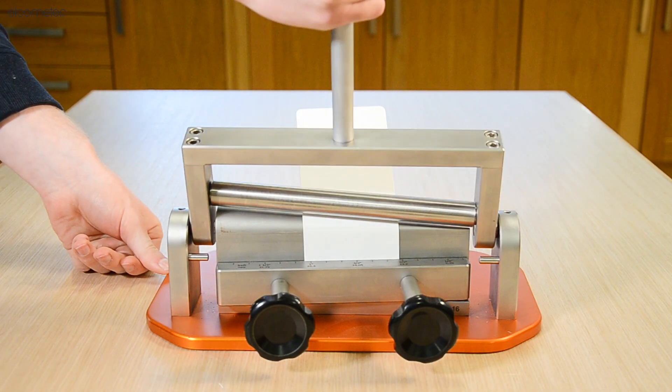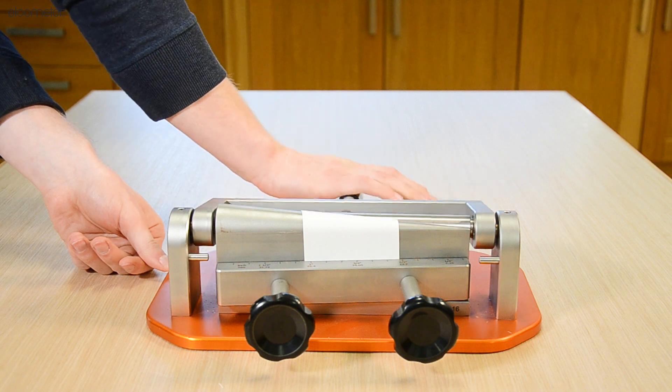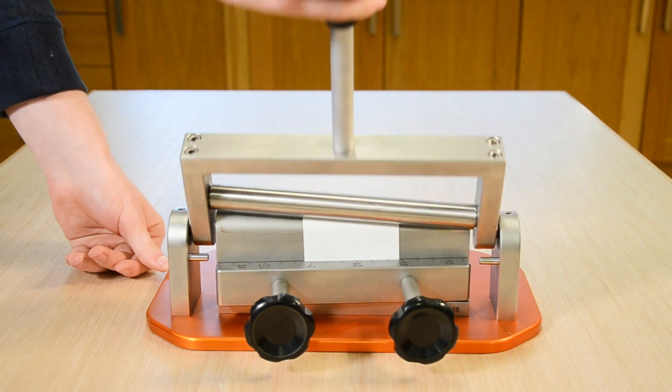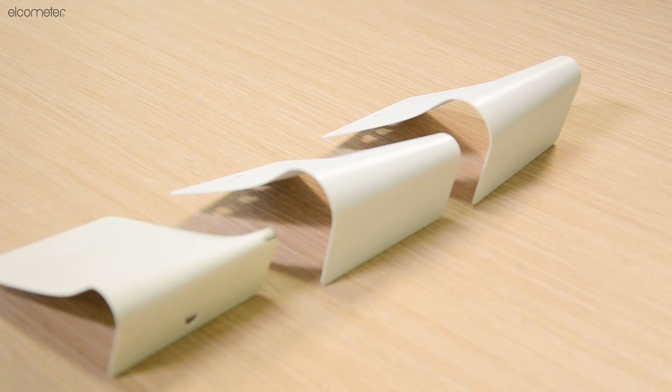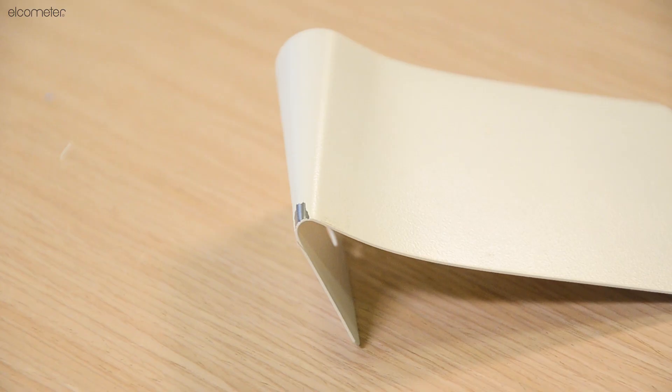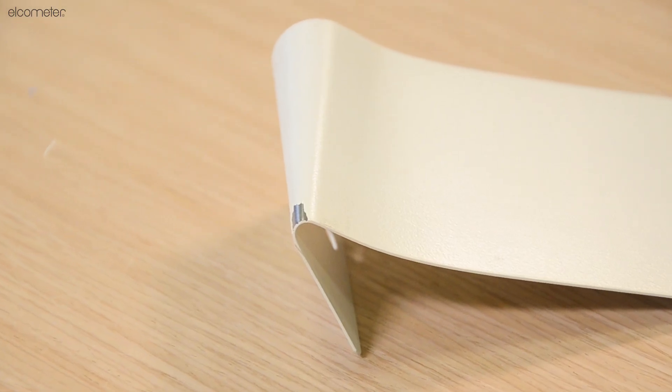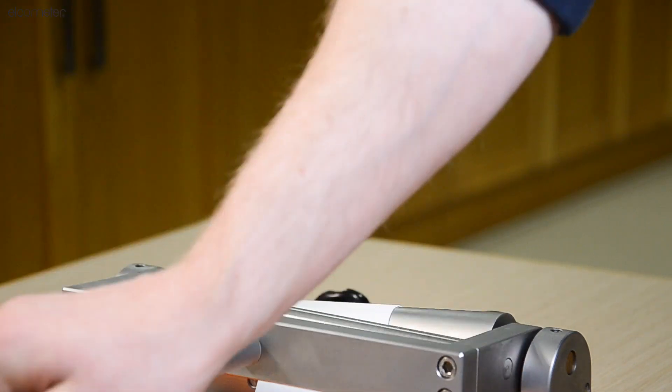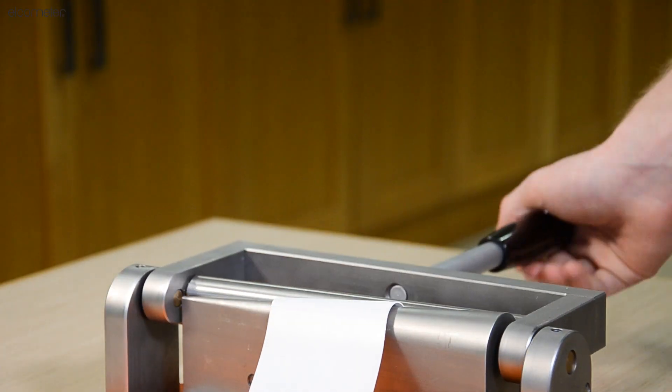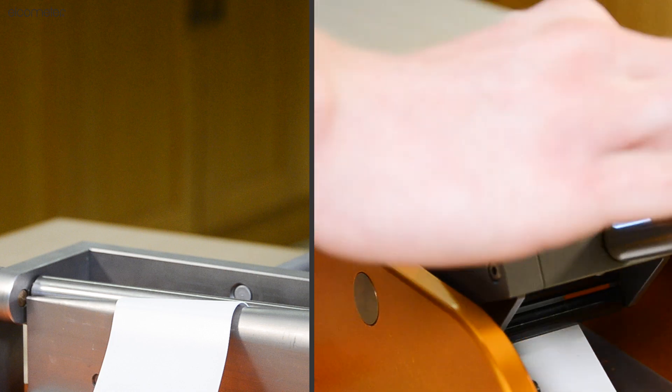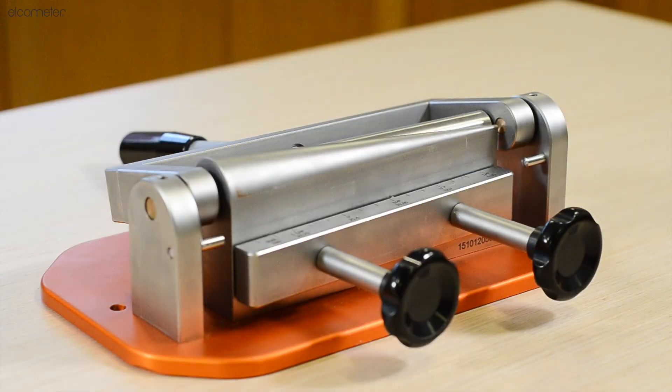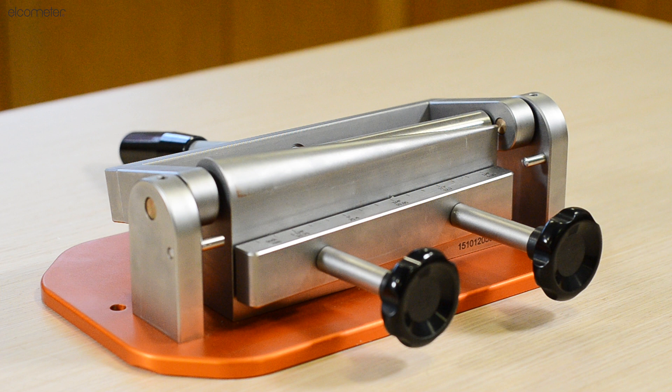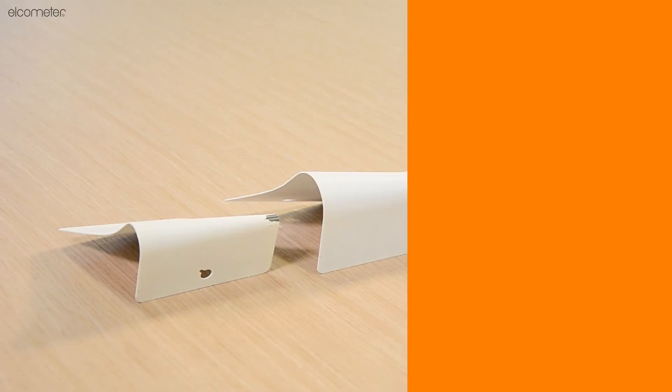During a conical mandrel bend test, a coated metal sheet is bent over a conical mandrel. This process will produce results which will test the coating in a gradual manner. This tester should be used first to provide an indication as to where to start your test on the cylindrical mandrel tester. This tester will allow you to approximate the point of failure for your coating and also saves on panels.